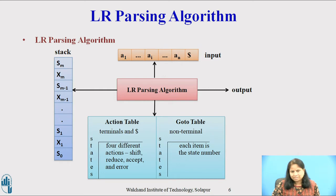The parsing program reads the character from an input buffer one at a time. The program uses a stack to store a string of the form S0, X1, S1, X2, S2 and so on up to XM, SM where SM is on the top. Each XI is a grammar symbol and each SI is a symbol called state. Each state summarizes the information contained in the stack below it. The combination of the state symbol on top of the stack and the current input symbol are used to index the parsing table and determine the shift-reduce parsing action.